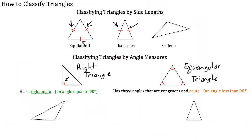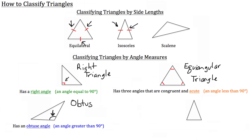The bottom left triangle is an obtuse triangle. This angle right here you can tell is going to be greater than 90 degrees. Any triangle with an angle greater than 90 degrees, as denoted by this arrow, is going to be an obtuse triangle.